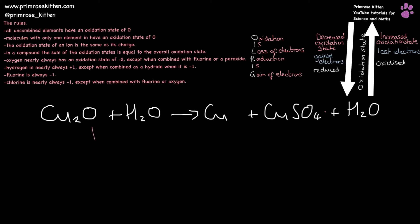So here we have oxygen that is going to be minus two, as is copper. There are two coppers in the copper oxide, so we need to make sure that the overall contribution from copper is plus two — that means each copper must be plus one, times two equals plus two, so this is actually going to be copper(I) oxide. Slightly off topic there, but still important for you to know.